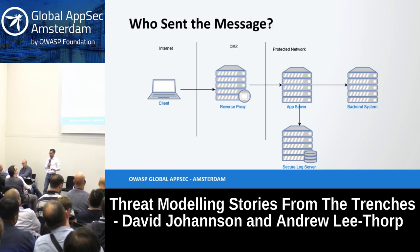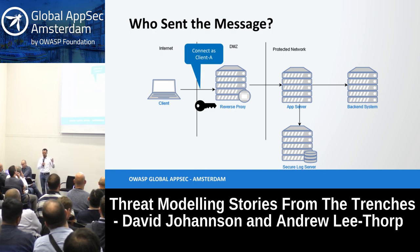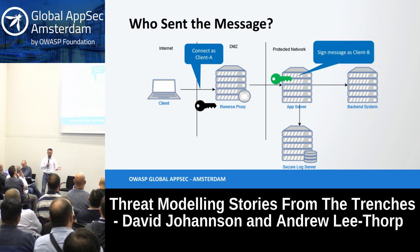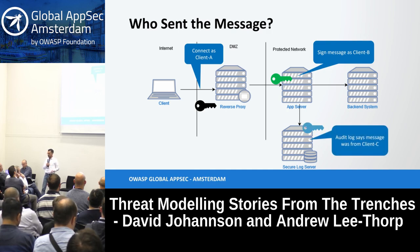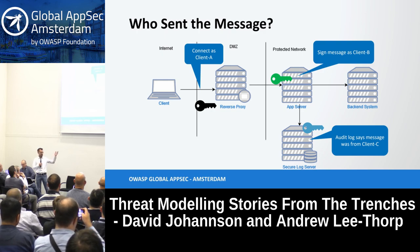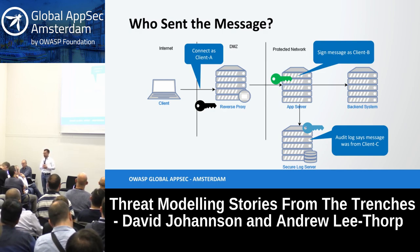In other words, you didn't know who actually sent the message because you could claim to be whoever you wanted. In practice, a client could connect as client A using certificates, be identified by the proxy as client A, but the message itself could have been signed by a completely different entity — client B. And then in the audit log it would say the message was sent from client C, which has no relation to the authentication or the signature. So all these controls were not providing the assurance they were designed to give.